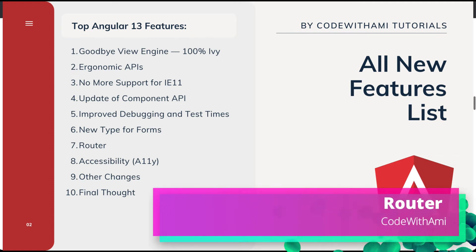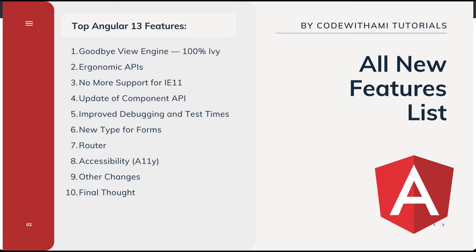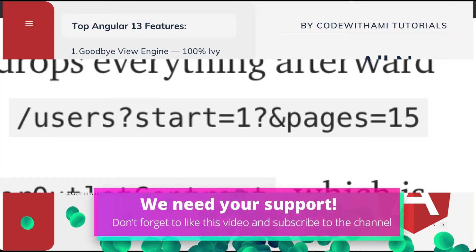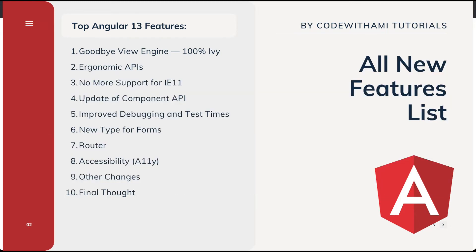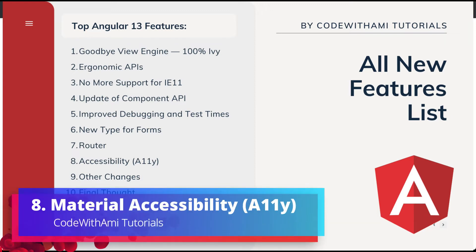The next change is with the Router API. The router will no longer replace the browser URL when a new navigation cancels an ongoing navigation. There is a fix for incorrect URL parsing that happened when the default URL serializer dropped everything after a question mark in query parameters. You can also add missing outlet events to the RouterOutlet contract, which is useful when Module Federation renders components dynamically.